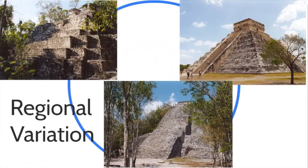The next thing I want to talk about is regional variation, and this is especially important with the Maya. A lot of times the people that we're studying we talk about as just one group where they're all the same, but with the Maya you're dealing with what is pretty clearly a group of city-states that are not ruled by one leader. These three examples of Mayan pyramids are all clearly pyramids and share features like rows of steps, but they vary in certain features from place to place — that's what regional variation is.